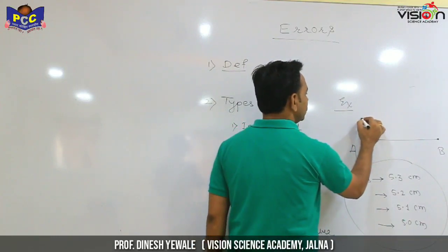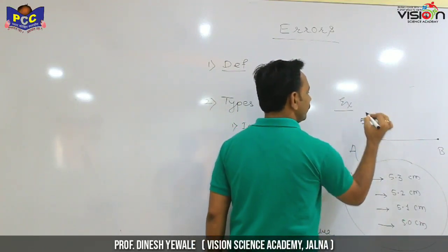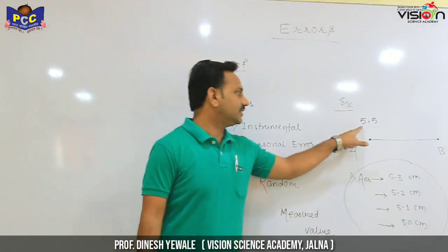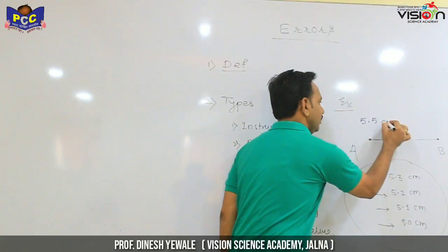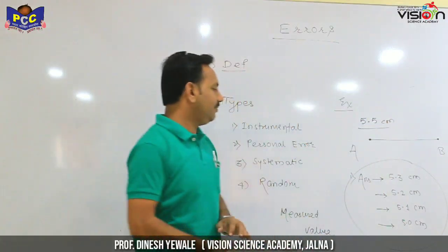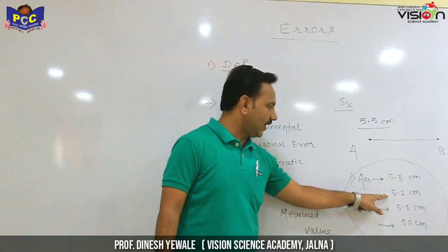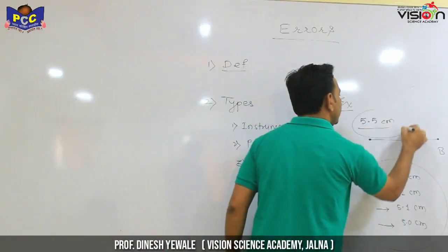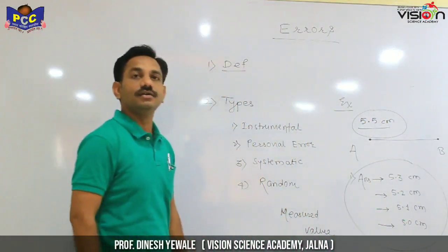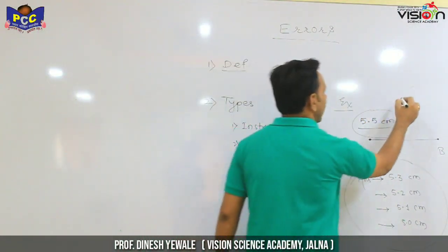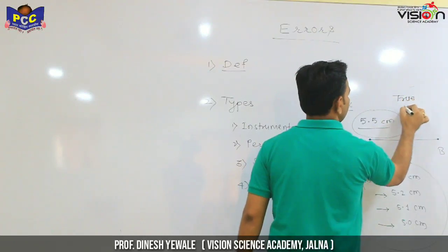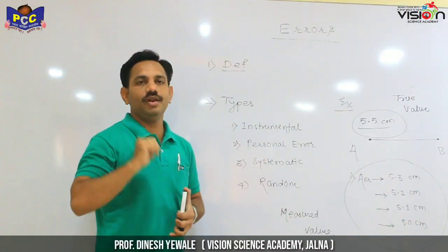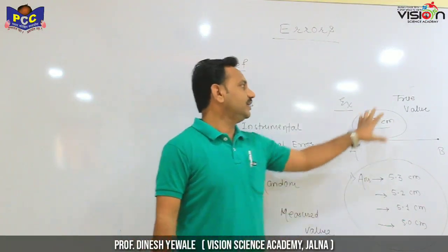If we have the original value, the exact answer — the original distance — is 5.5 cm. That is the true value. So we have two things: one is the measured value and the second is the true value. We have to find the difference between the measured value and the true value.